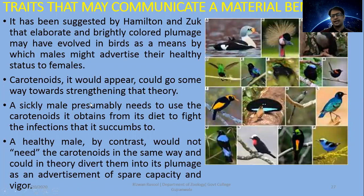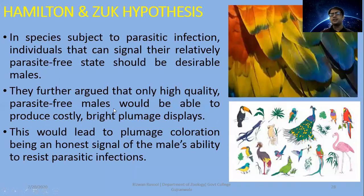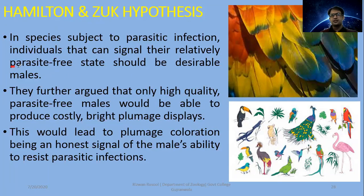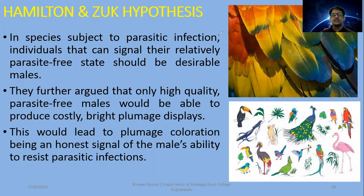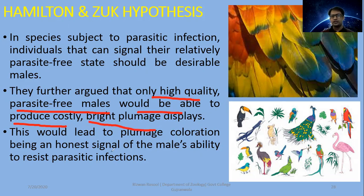This means that healthier males will have brighter plumage, and that brightness is related to the deposition of carotenoids in their plumage. Their hypothesis states: individuals subject to parasitic infection that can signal their relatively parasite-free state should be desirable males for mating purposes. They further argued that only high-quality, parasite-free males would be able to produce costly bright plumage displays, making plumage coloration an honest signal of the male's ability to resist parasitic infections.